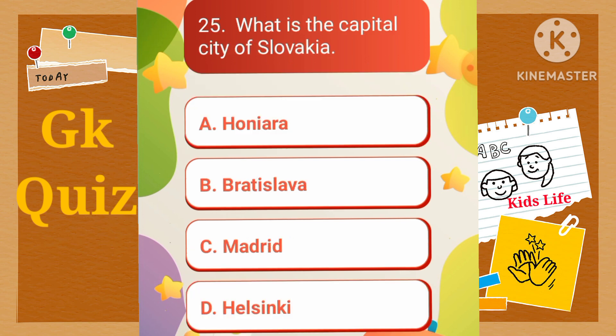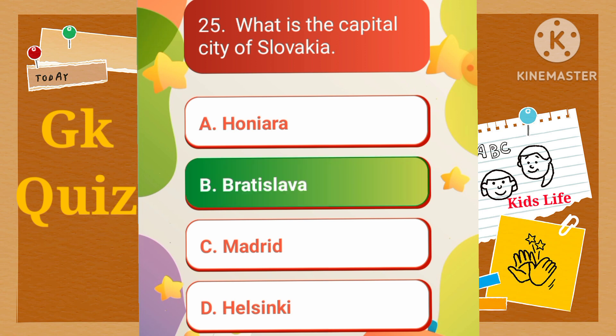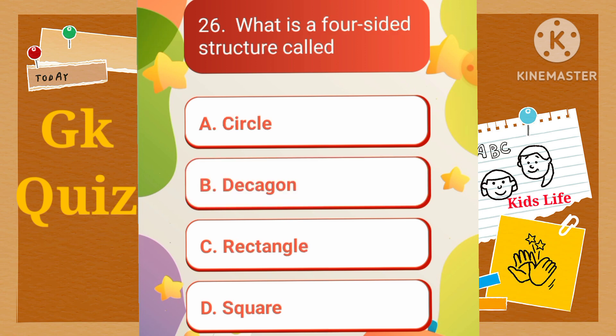What is the capital city of Slovakia? A) Honiara, B) Bratislava, C) Madrid, D) Helsinki. What is a four-sided structure called? A) Circle, B) Decagon, C) Rectangle, D) Square.